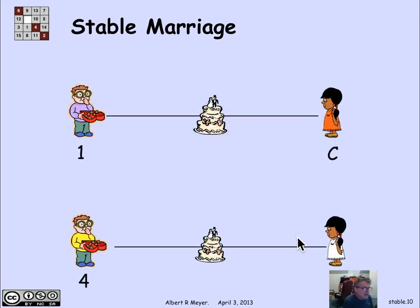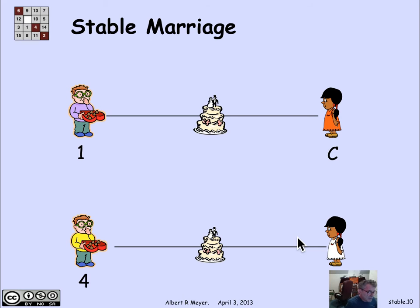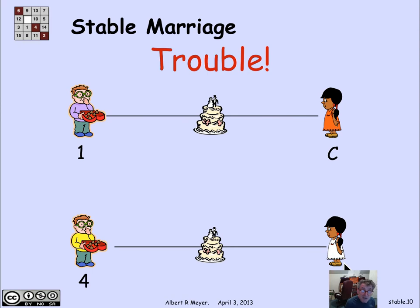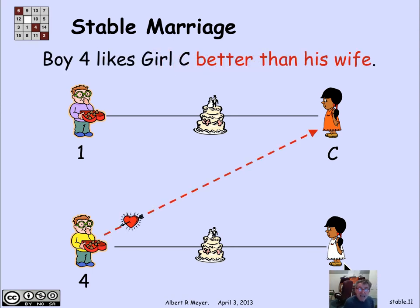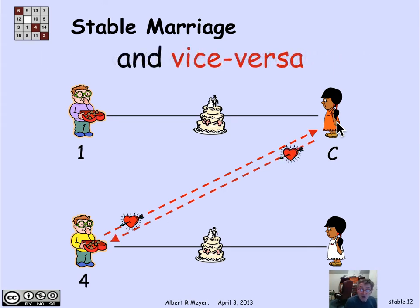Now if we look at this set of marriages, there's a problem which motivates the whole stable marriage problem. We've married off boy one to his first choice, girl C — he should be happy, but she may not be. We've also married off boy four to girl B. A difficulty here is that girl C is actually more desirable to boy four than girl B. Boy four likes somebody else's wife better than his own, and what makes it really bad is that girl C likes boy four better than her own husband. Each of them would be better off if they ran off together, and they are under tremendous pressure. It makes the set of marriages unstable.